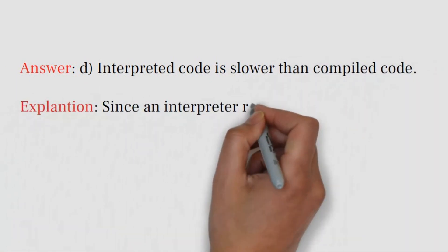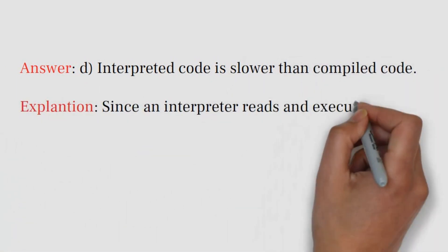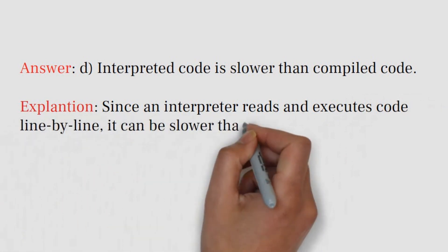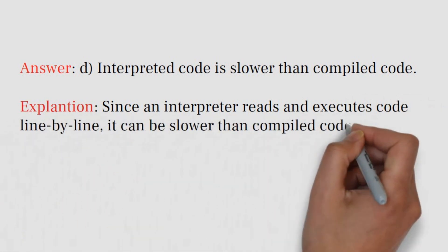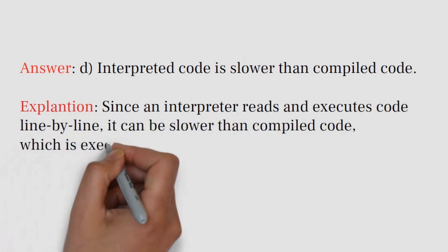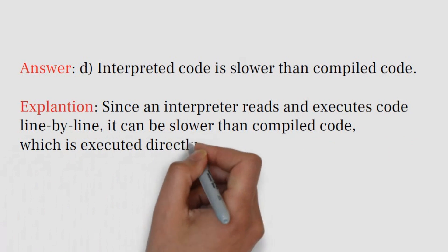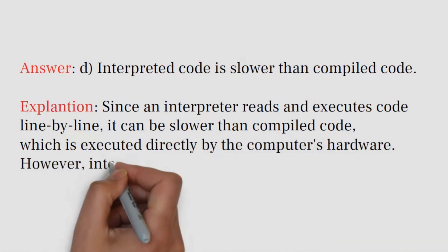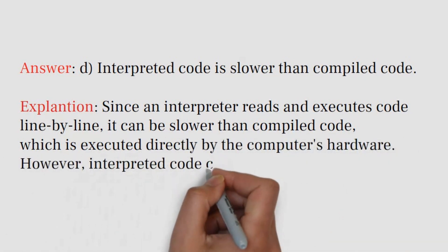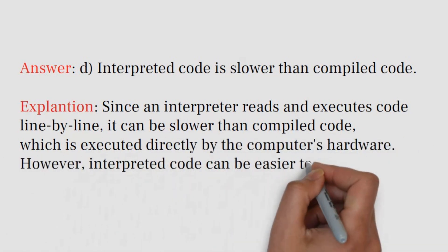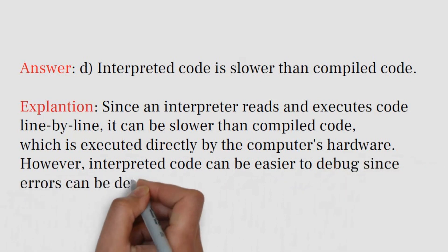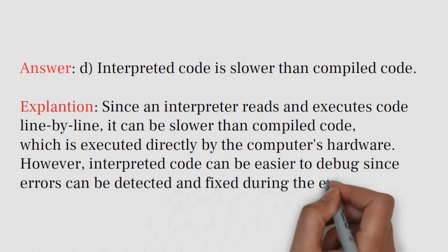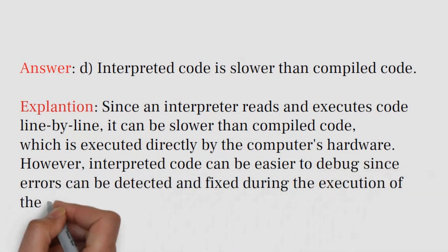Explanation: Since an interpreter reads and executes code line by line, it can be slower than compiled code, which is executed directly by the computer's hardware. However, interpreted code can be easier to debug since errors can be detected and fixed during execution of the program.